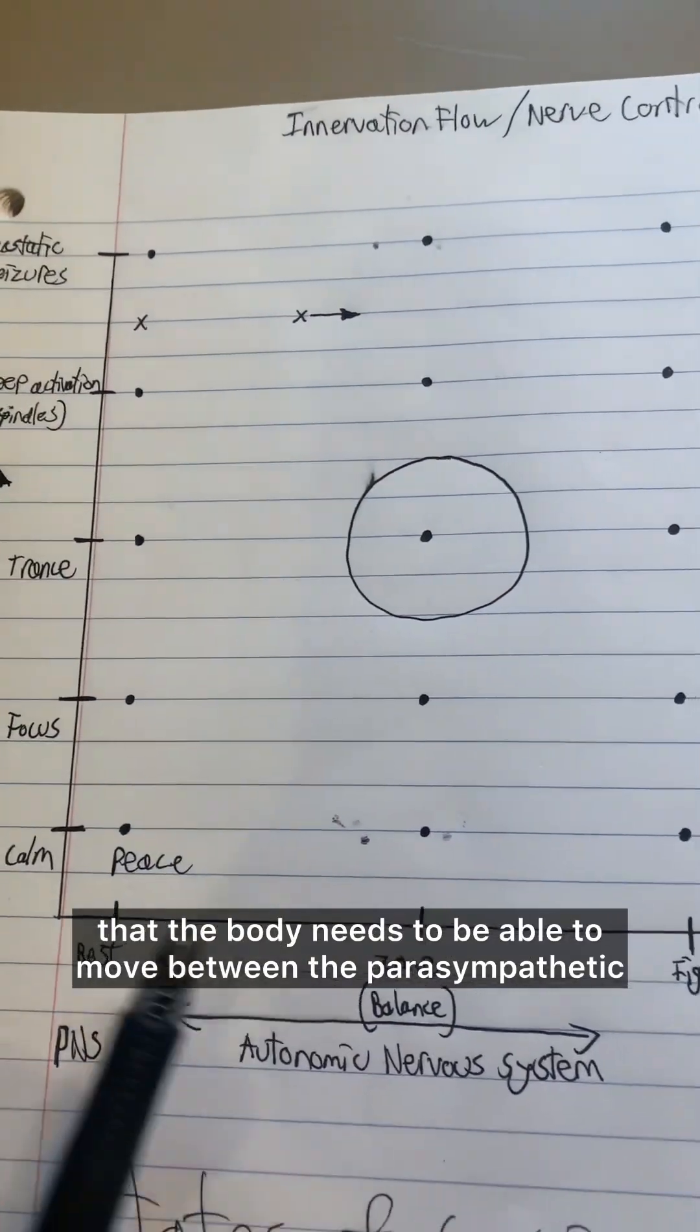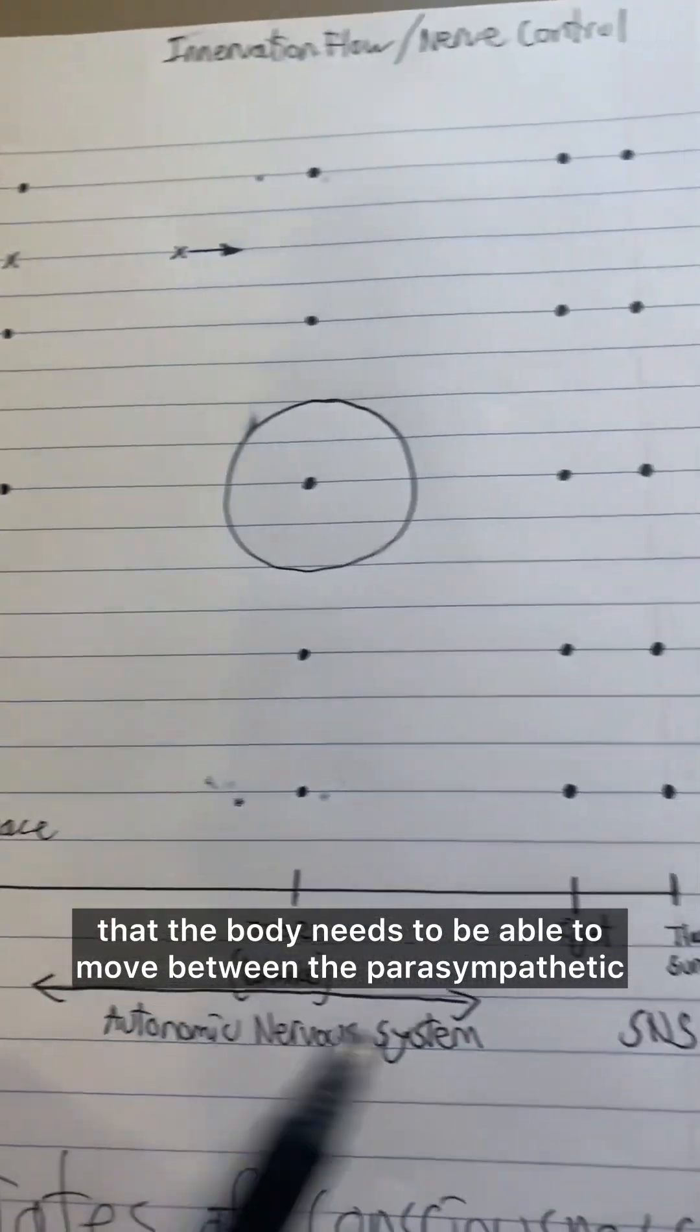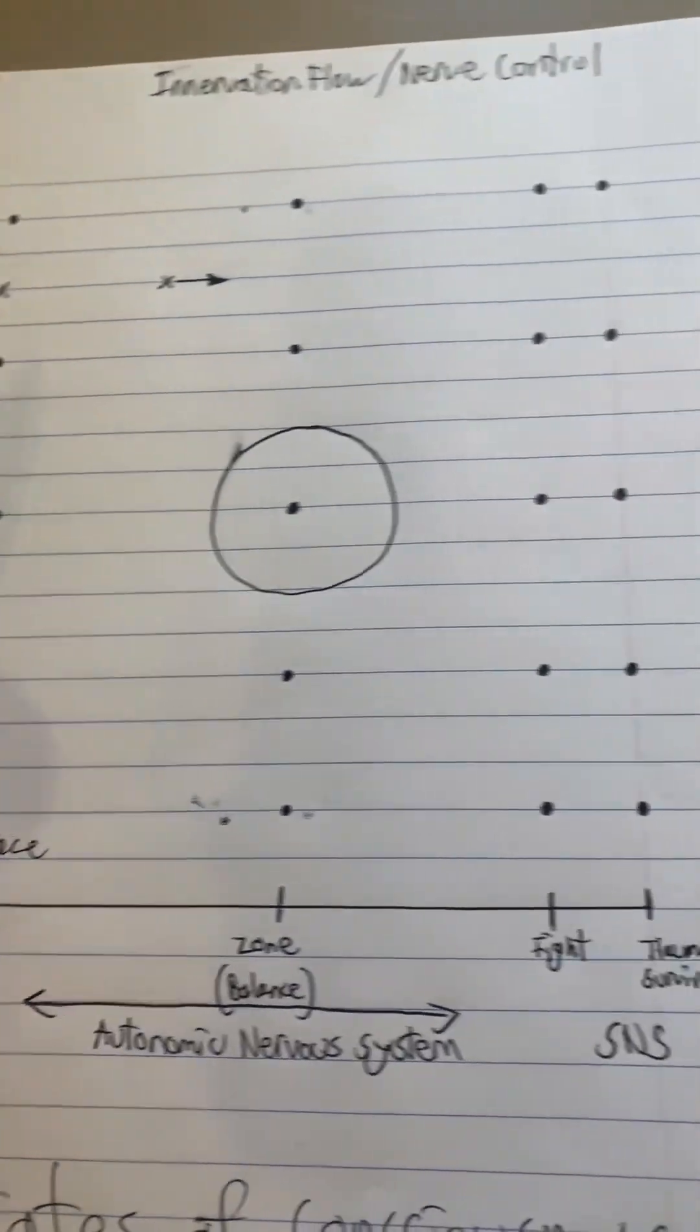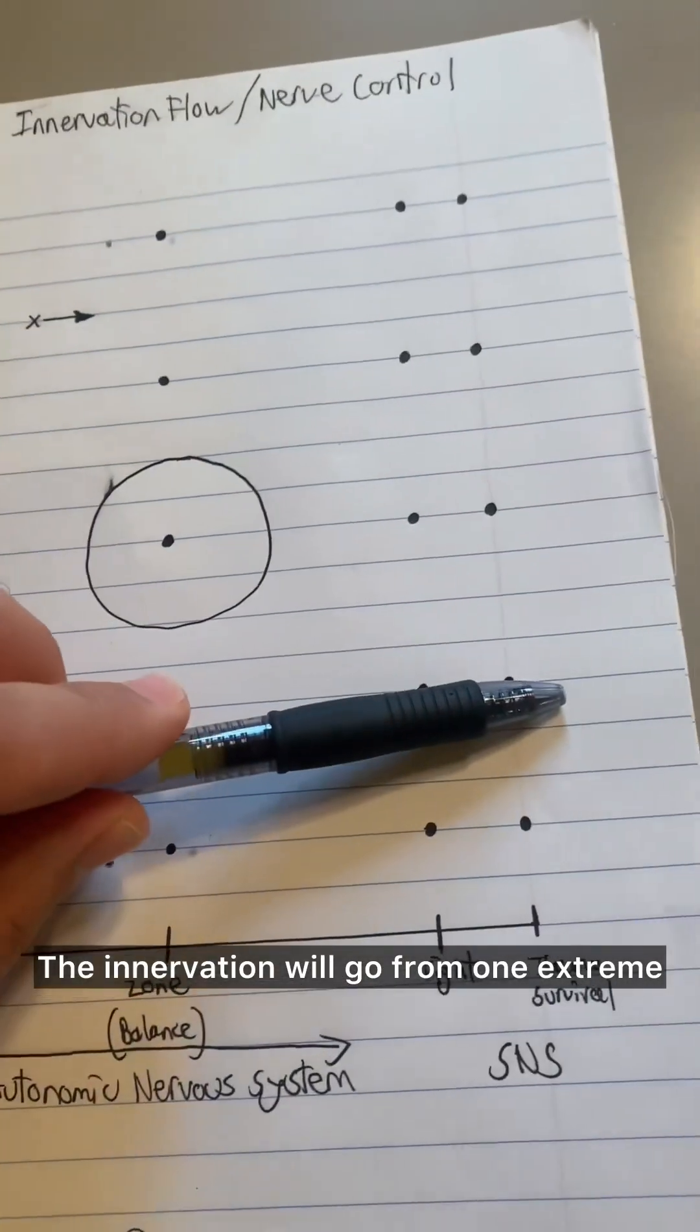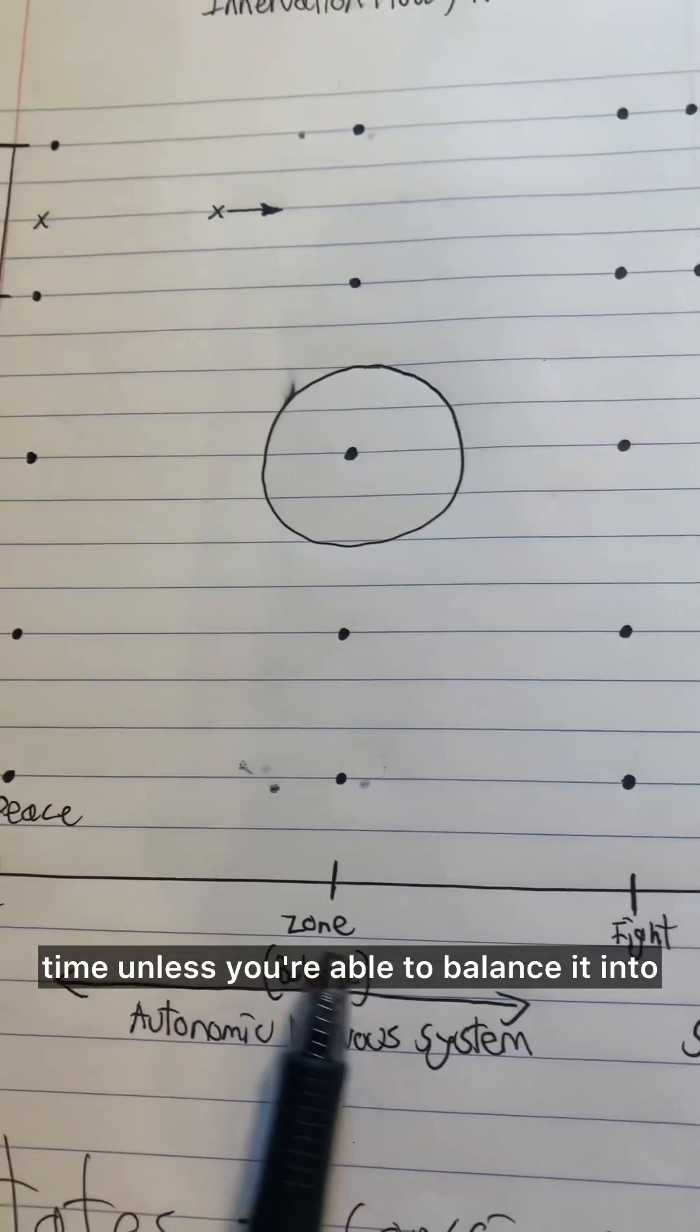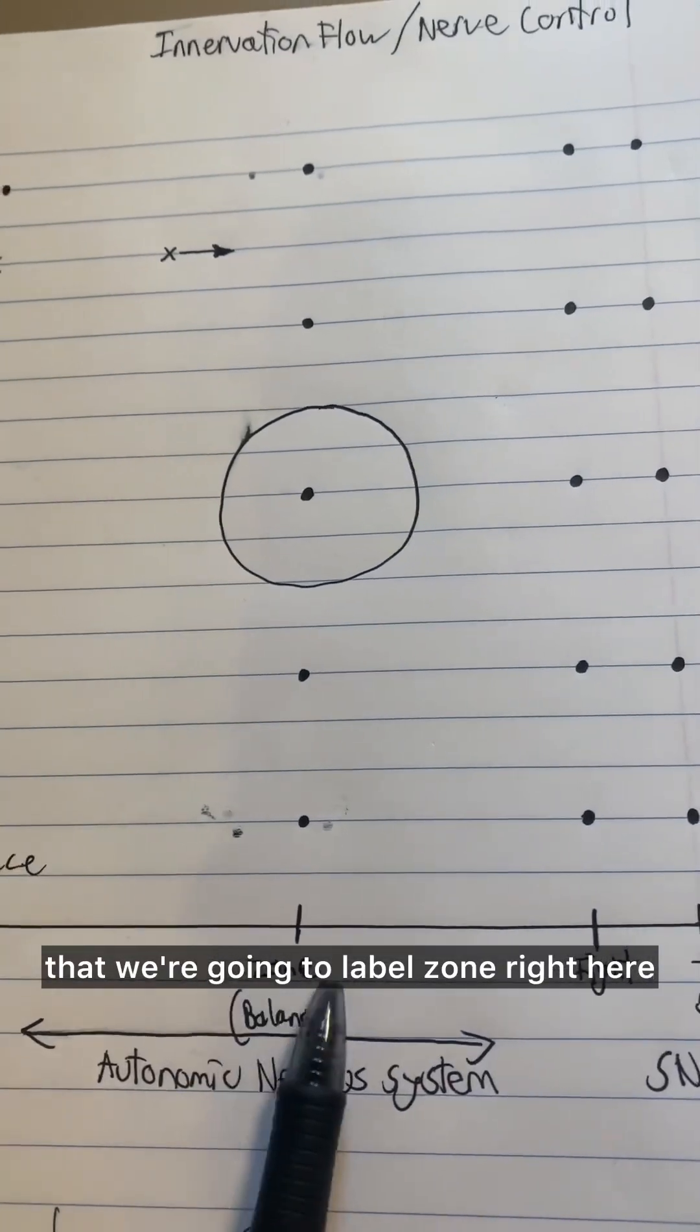So it's important to understand that the body needs to be able to move between the parasympathetic and the sympathetic nervous system. And the more time you spend in one extreme, the more time you'll jump to another extreme. The innervation will go from one extreme, and then need to rest at longer periods of time, unless you're able to balance it into this sort of sweet spot that we're going to label zone right here.